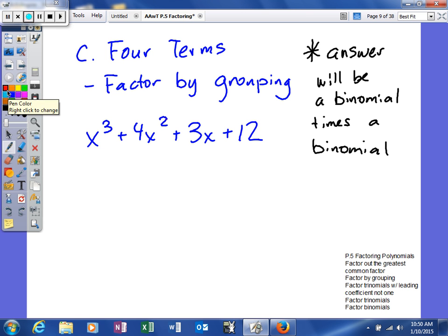So here's our polynomial, x cubed plus 4x squared plus 3x plus 12. So it's a cubic four-term polynomial. And what we're going to do is we're going to factor by grouping. The way factor by grouping works is you group the first two terms together and the last two terms together.